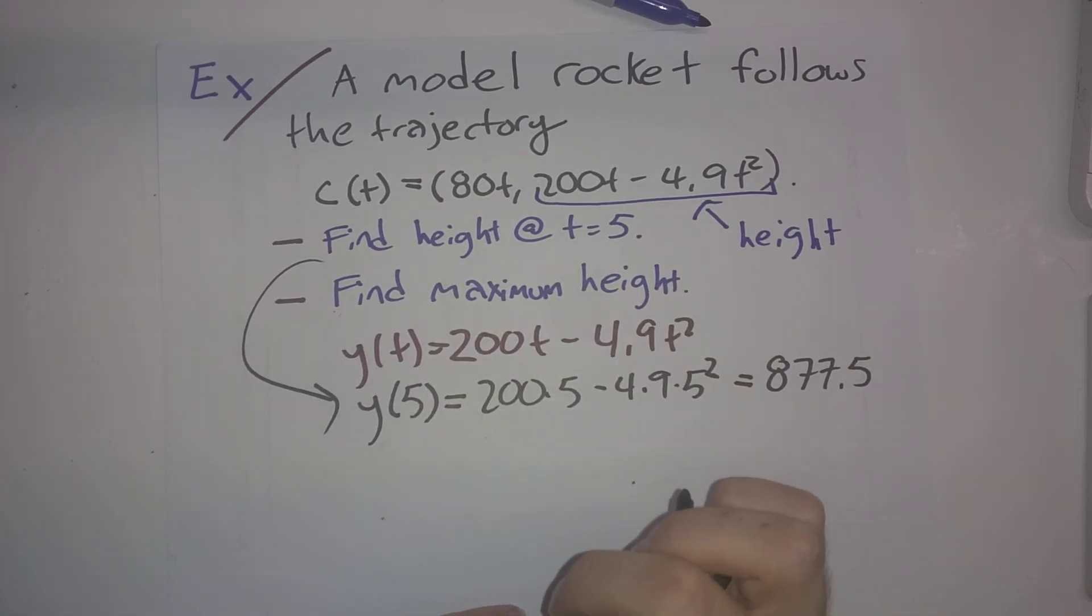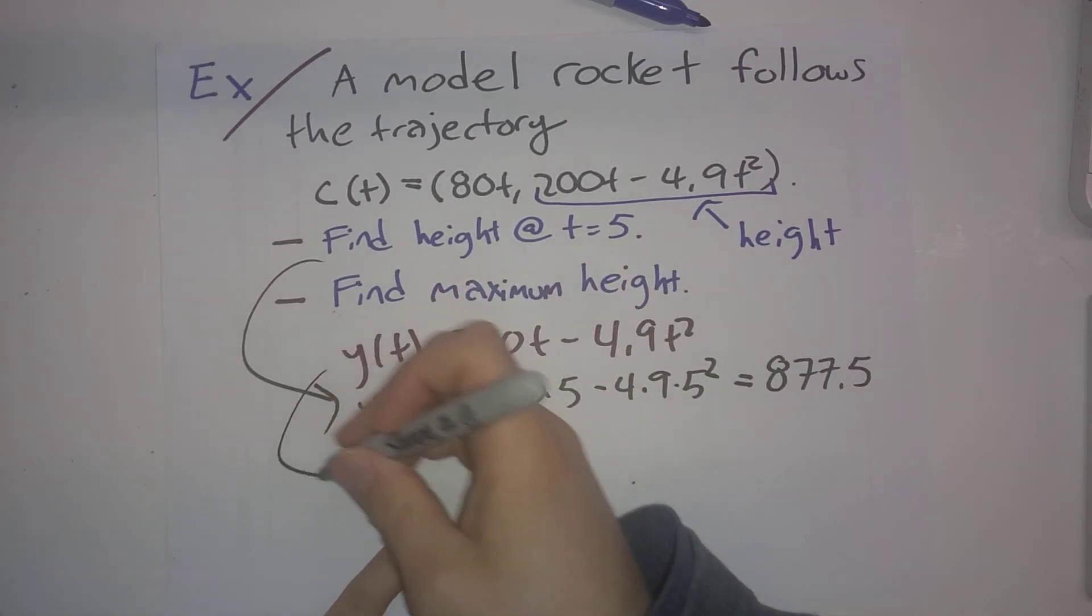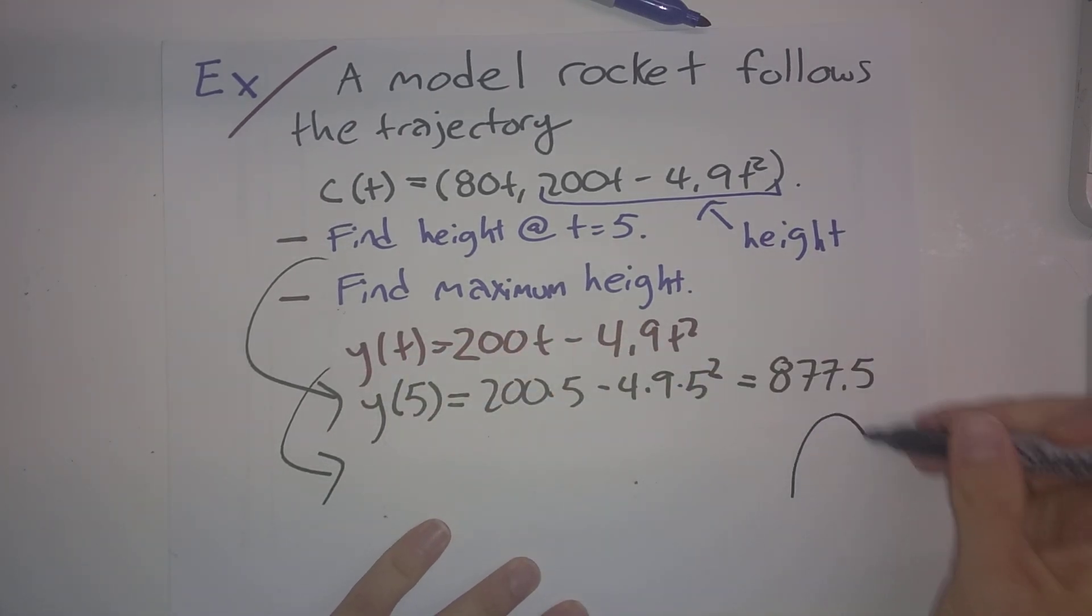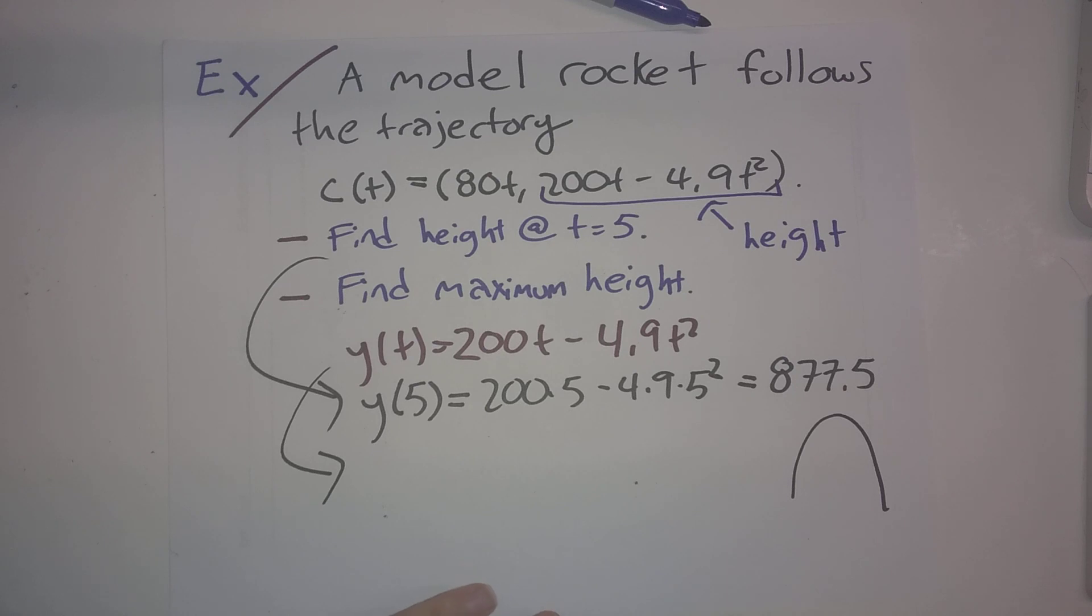Okay, so for maximum height, this is just a calc 1 problem. We want to maximize this as a function of t. It's a downward opening parabola. It's only going to have one critical point. And the max will happen at that critical point.